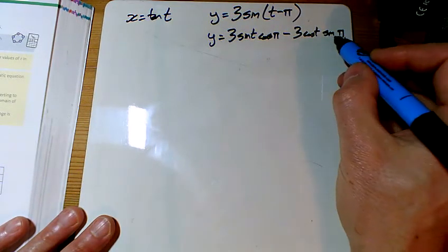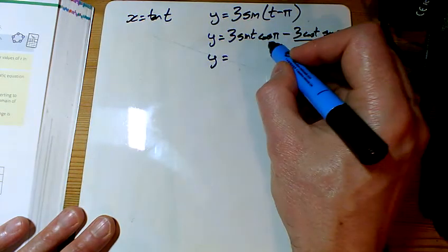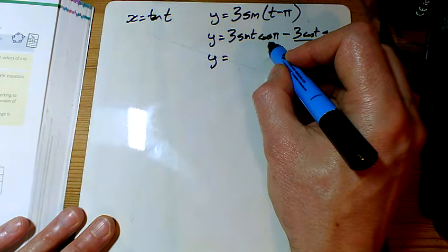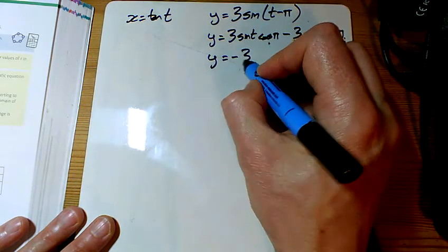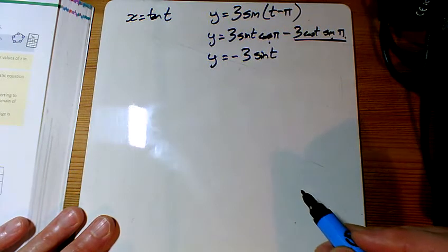Well, the sine of pi is 0, so that whole bit is 0. And the cos of pi is minus 1. So this bit here is minus 3 sine t. And I'm sure we did that earlier as well.